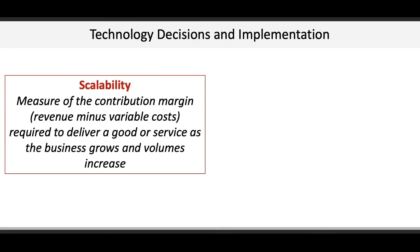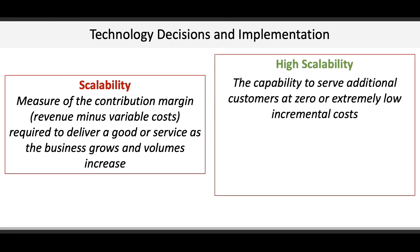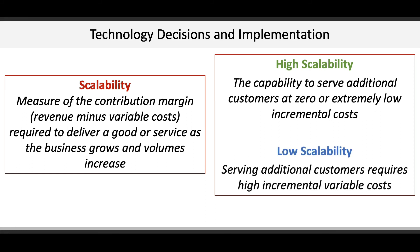The last concept in Chapter 4 focuses on technology decisions and implementation. Here we learned about scalability, which is the measure of contribution margin required to deliver goods and services as the business grows and volumes increase. Firms that have high scalability are able to serve additional customers with zero or extremely low incremental costs. Shopify is a prime example of this, where selling to one customer or 1,000 customers essentially costs the same. Firms that have low scalability require high incremental variable costs to serve additional customers.